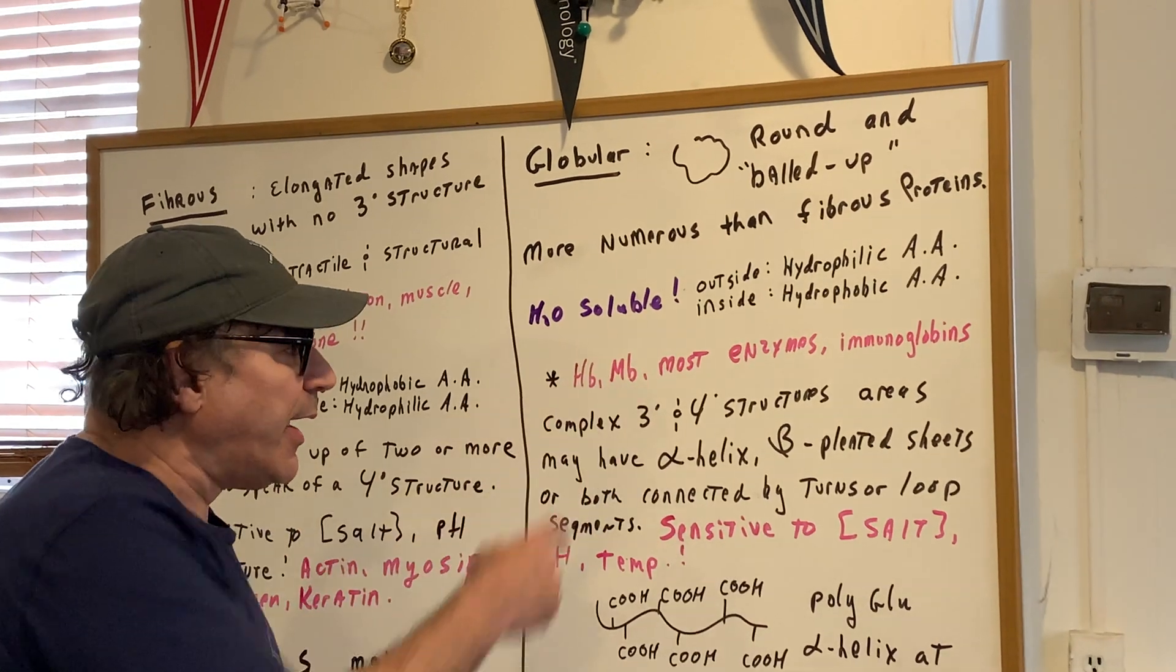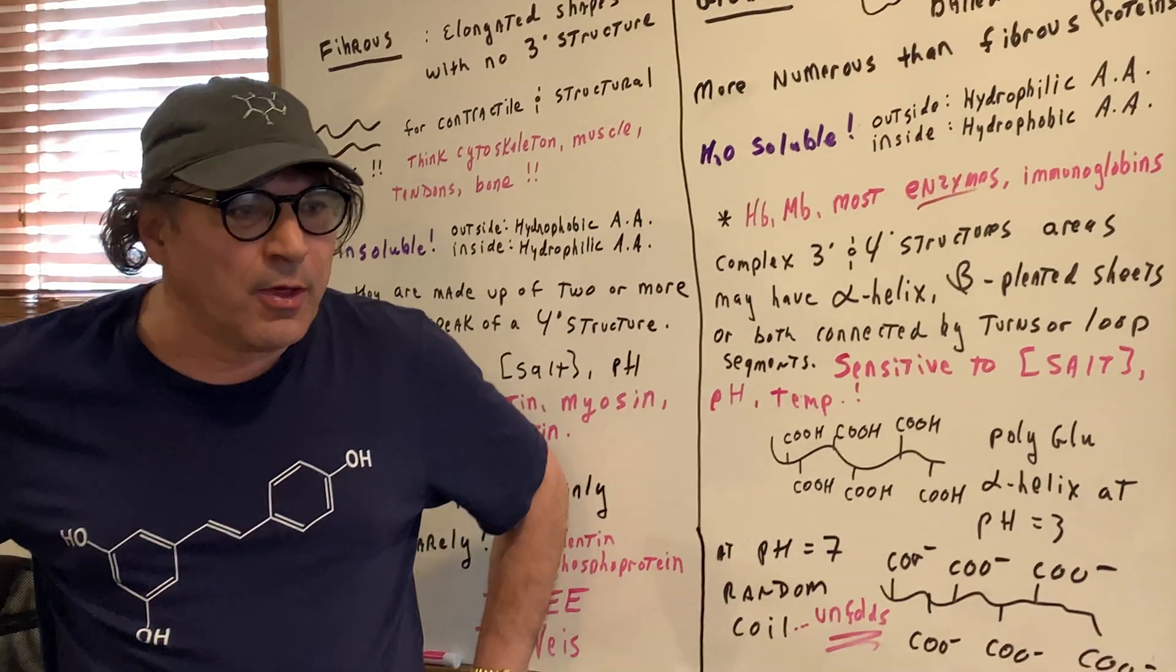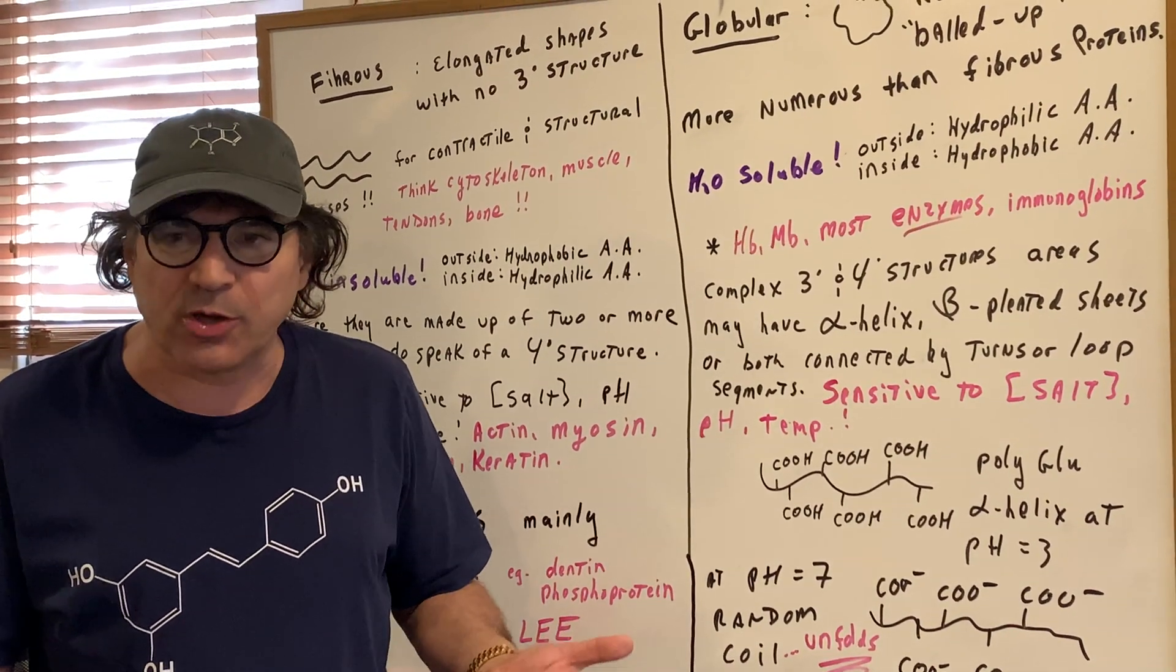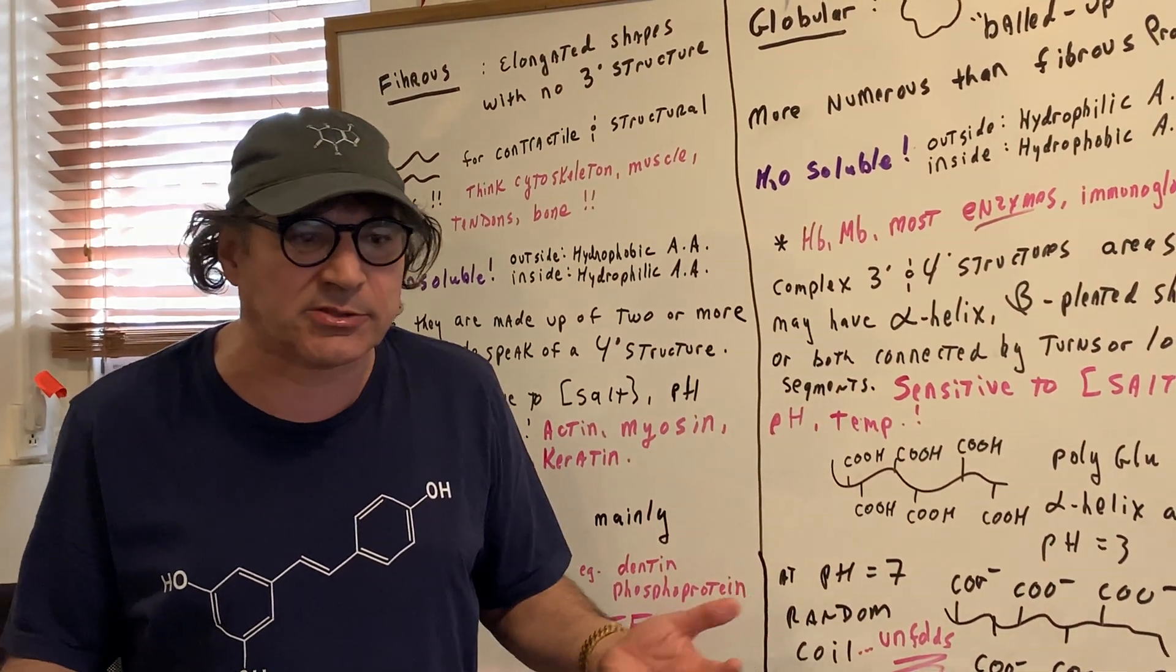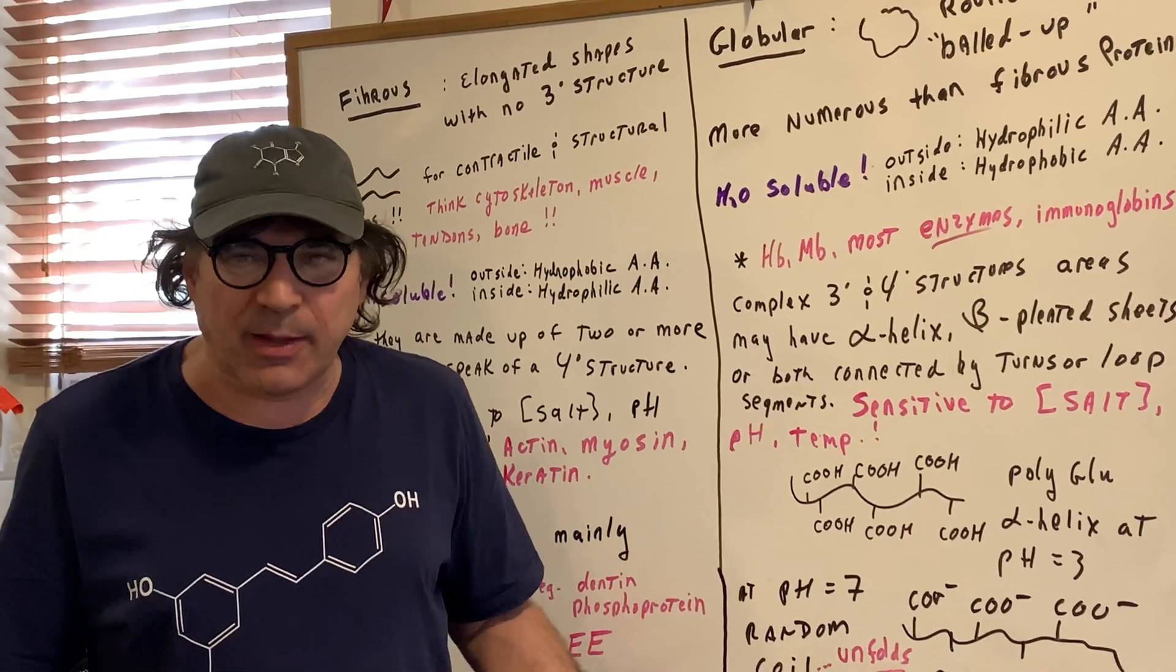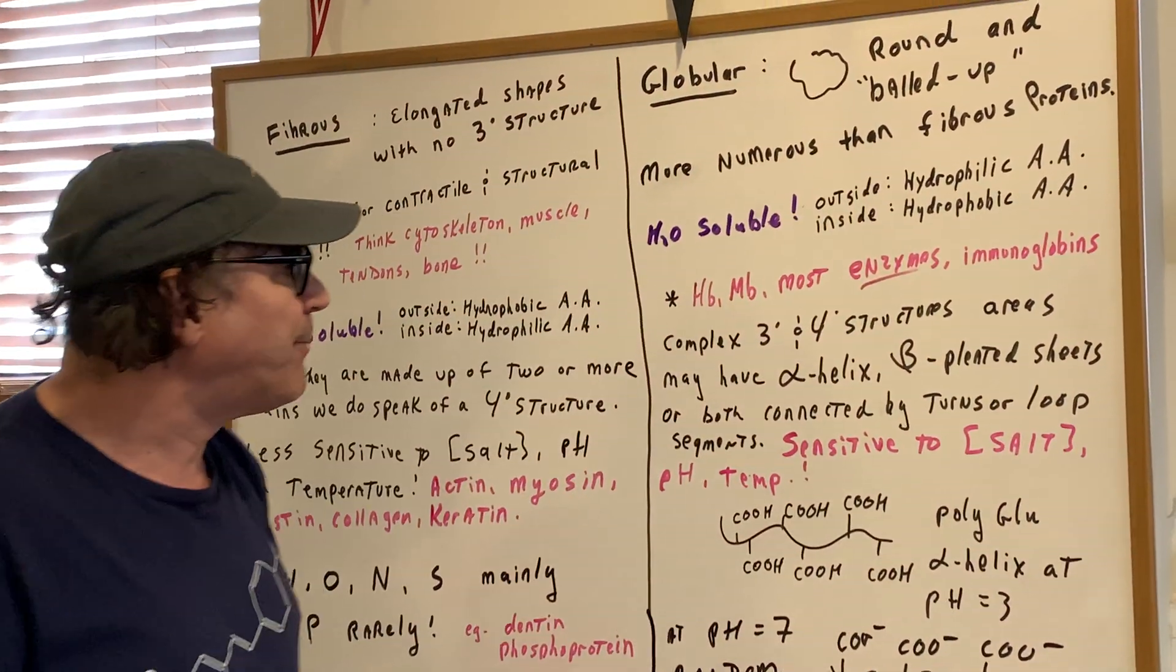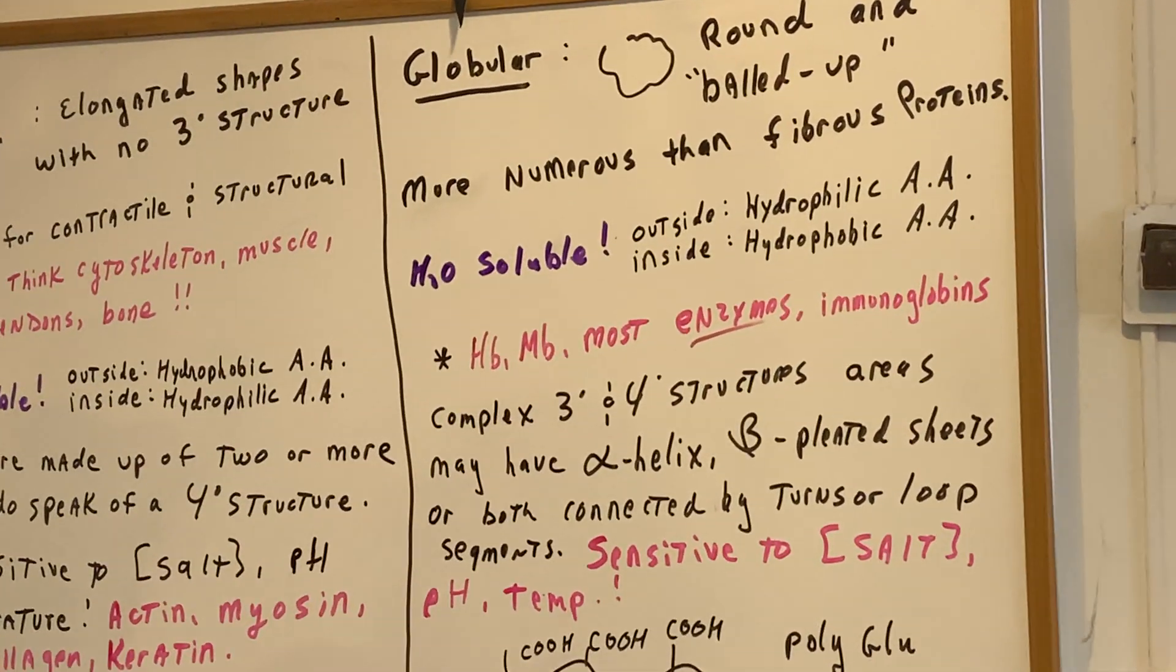Good exam question would be giving me some examples. Hemoglobin, myoglobin, most enzymes. If you remember on yesterday's study group, it says which is not considered a fibrous protein. The answer was anybody remember the answer? Right, it was carboxypeptidase. Again, carboxypeptidase is a what? Enzyme. If it's an enzyme, it's globular. And also antibodies, which are also called immunoglobulins, are globular proteins.